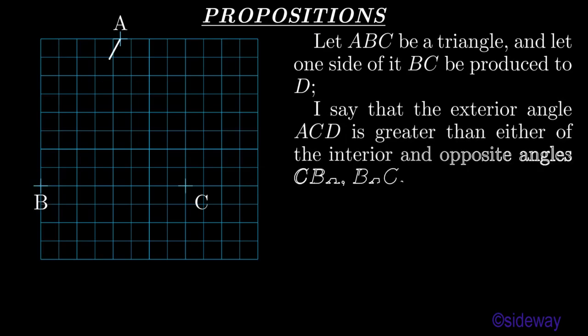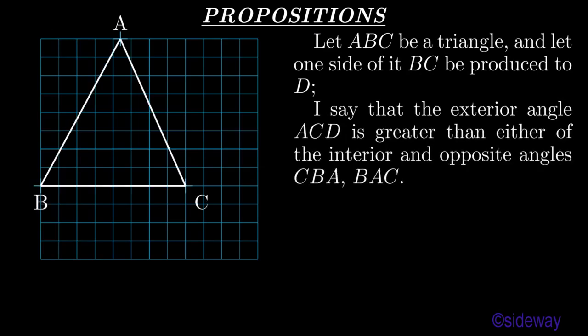Let ABC be a triangle, and let one side of it, BC, be produced to D. I say that the exterior angle ACD is greater than either of the interior and opposite angles CBA, BAC.